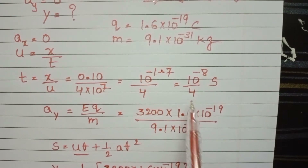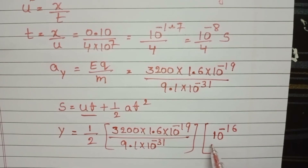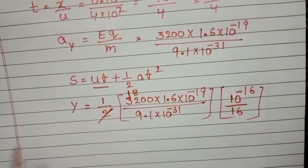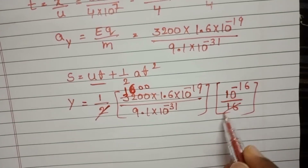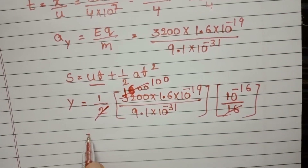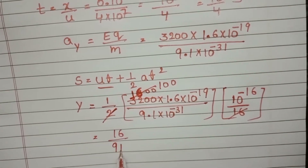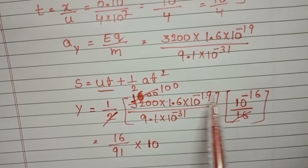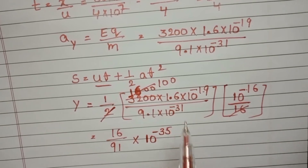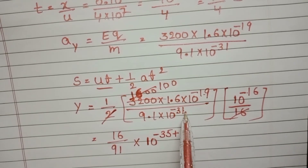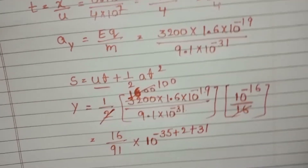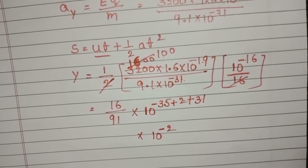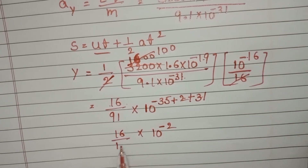Here t equals 10 to the power minus 8 by 4, so t squared becomes 10 to the power minus 16 by 16. Simplifying: 3200 gives a factor of 10 to the power plus 2, the powers of 10 combine as minus 19 and minus 16 giving minus 35, and minus 31 goes to the numerator giving plus 31. So the power of 10 becomes minus 35 plus 33 equals minus 2. And 16 divided by 91 simplifies to approximately 0.176.